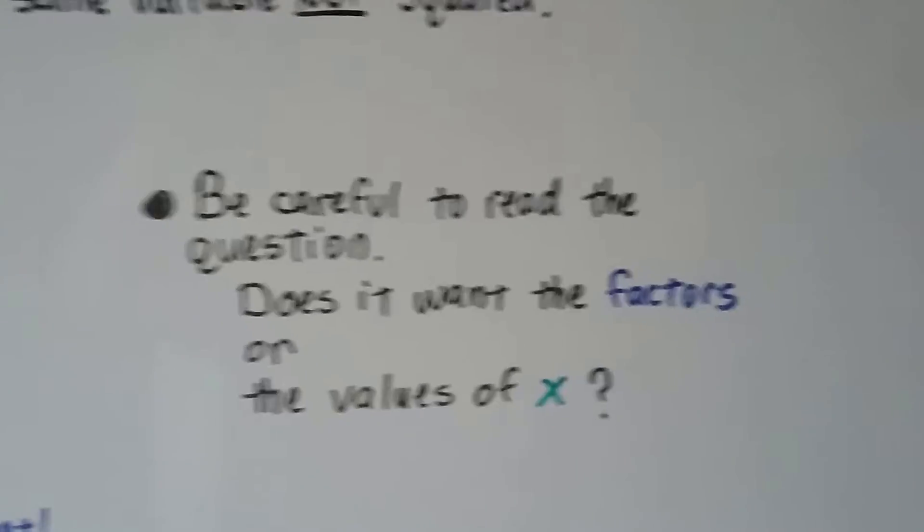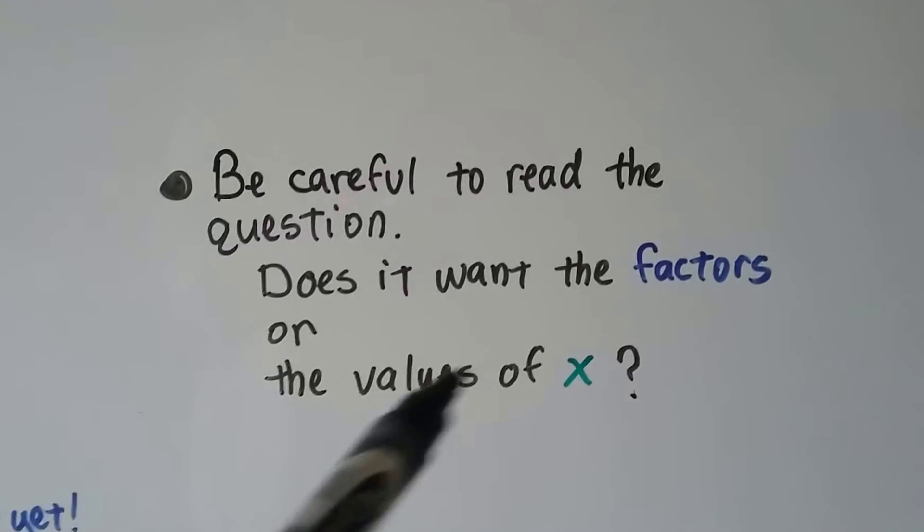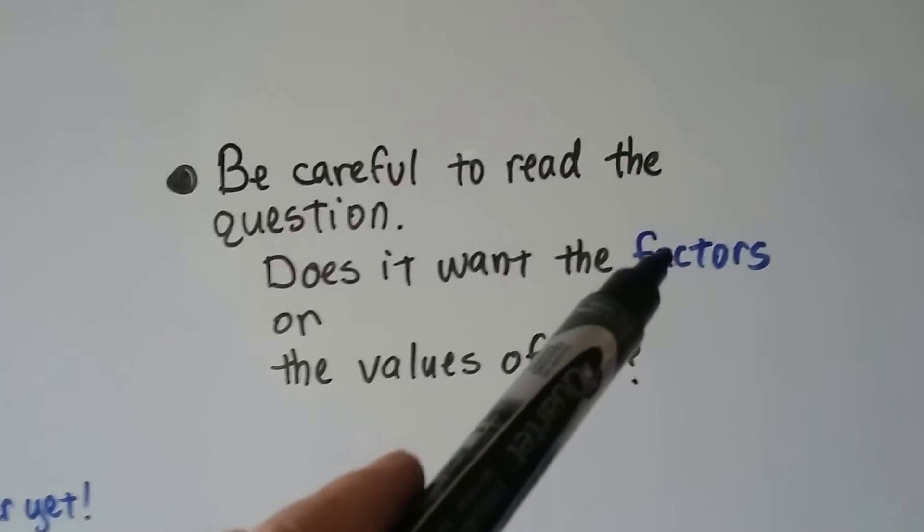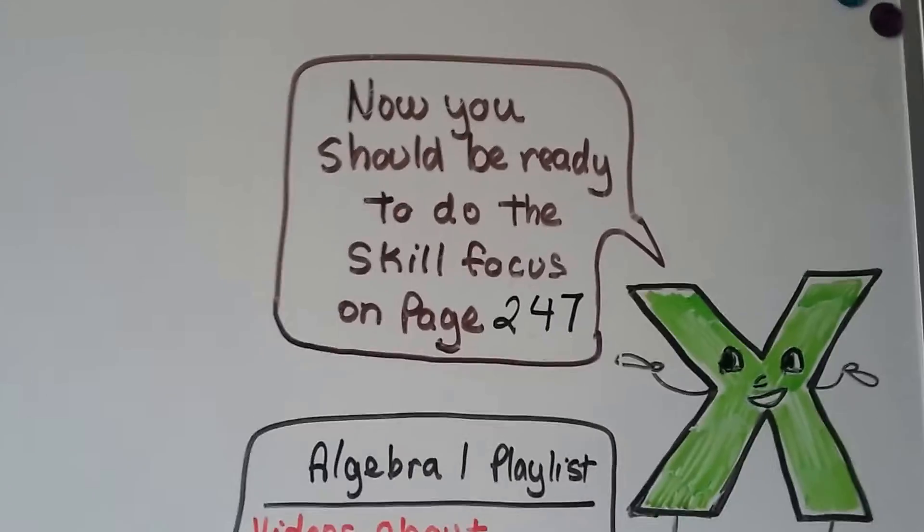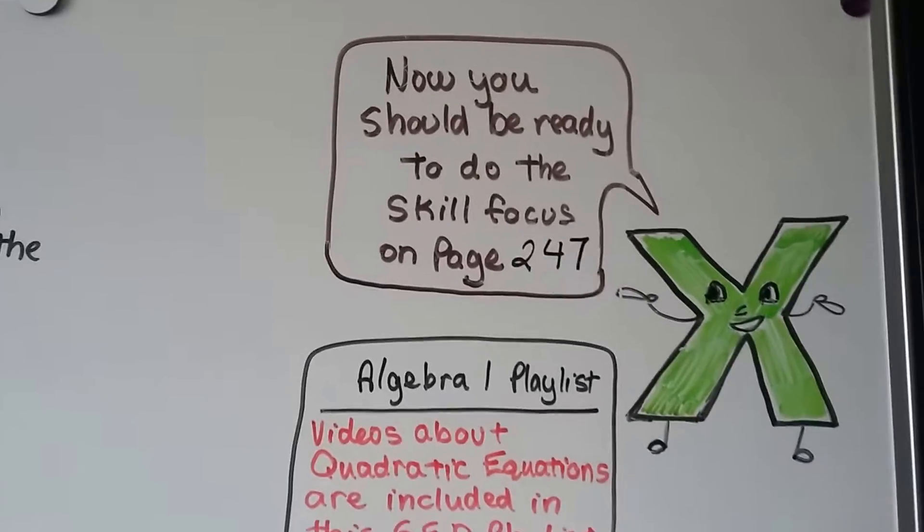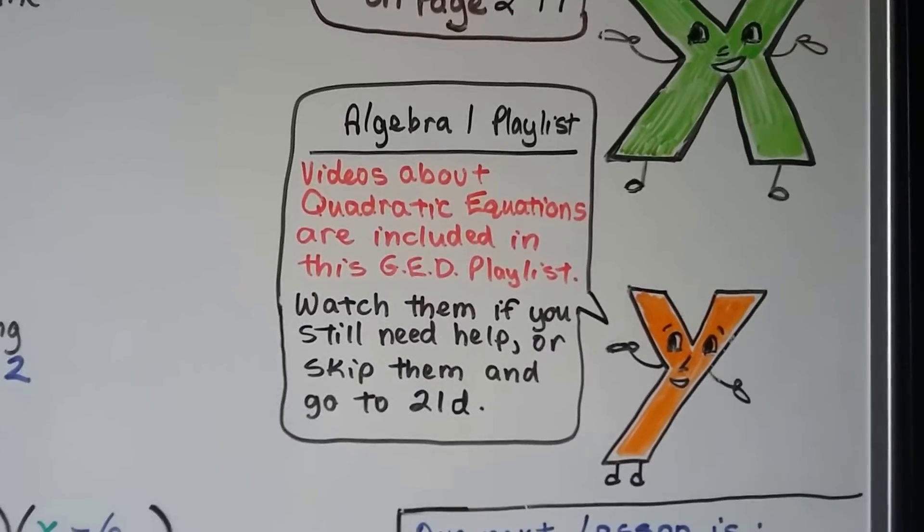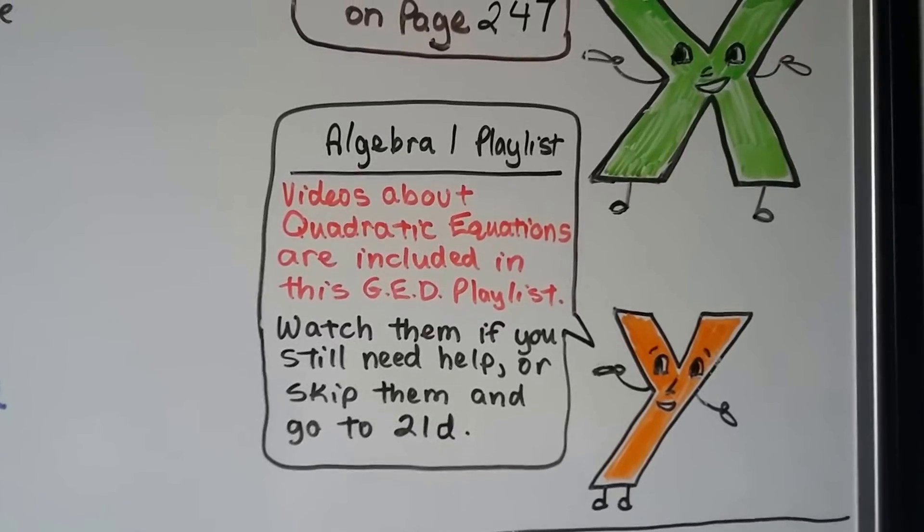So, be careful to read the questions. Does it want the factors, those two sets of parentheses? Or does it want the values of x? Because if it wants the values of x, it's going to be the inverse of those factors, isn't it? Just be very careful. So, you should now be ready to do the skill focus on page 247. If you have any problems, you can watch this video again.